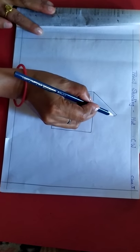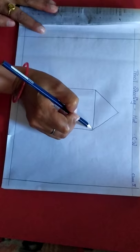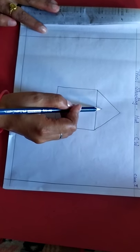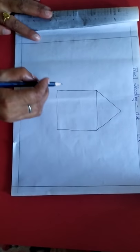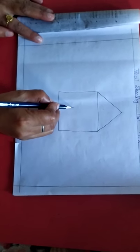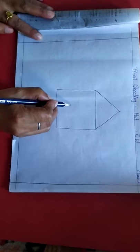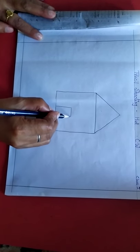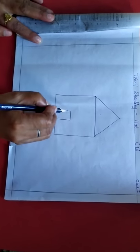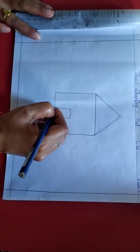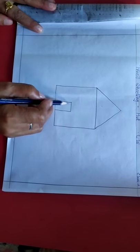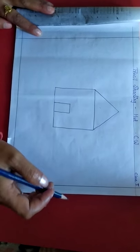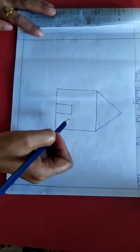Now which shape is this? Triangle. Oh fine. Now here I am going to draw a door. It's a door and this is also a rectangle shape.